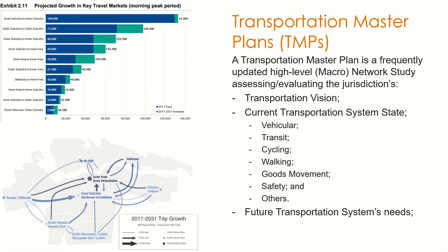The Transportation Master Plan also looks into future transportation system needs — for instance, analyzing those needs based on collected data, as well as macro-level analysis or traffic assignments, reflecting the network's anticipated future. To your left on the bottom slide, you would see a figure showing travel patterns in and out of the central business district in Ottawa, extracted from Ottawa's TMP.